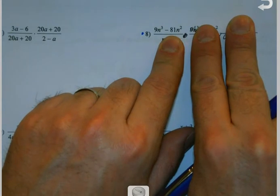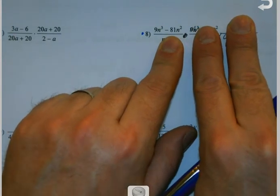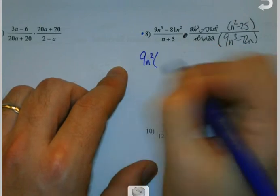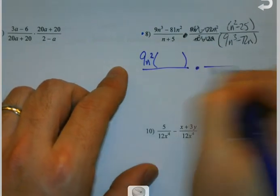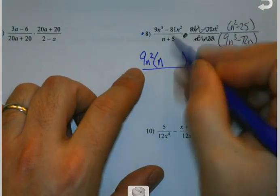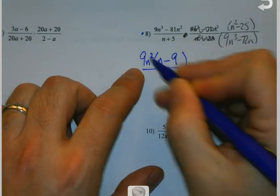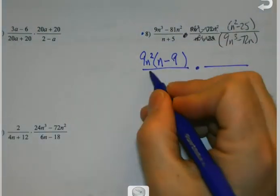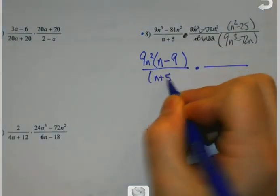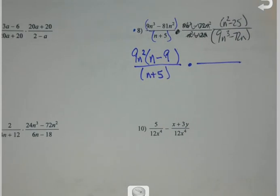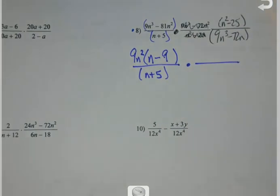9 goes into 9 and 81, and we take the smallest exponent, so 9n squared. Just an n, minus 9. 9 times 9 is 81, I already got the n squared, no more n's. I've got my n plus 5 — that didn't do much. Oh, here comes our Achilles heel — we've got a difference of squares.